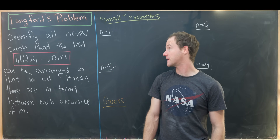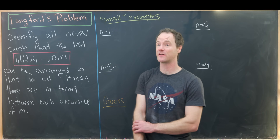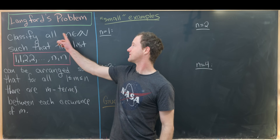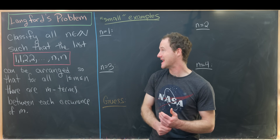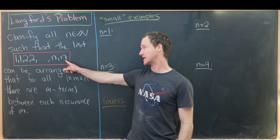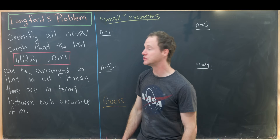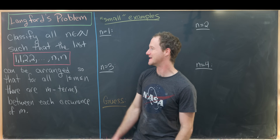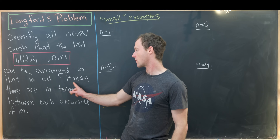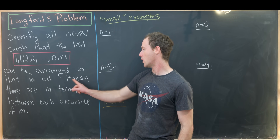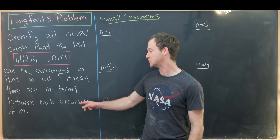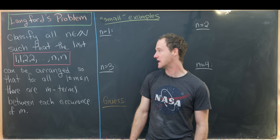Here I want to show you a nice combinatorics problem known as Langford's problem. The idea is we want to classify all natural numbers n so that the list of 2n natural numbers 1, 1, 2, 2, 3, 3, all the way up to n, n can be arranged so that for all m between 1 and n, there are exactly m terms between each occurrence of m.